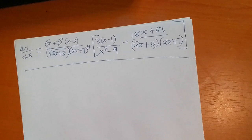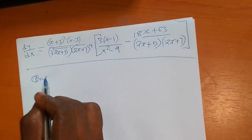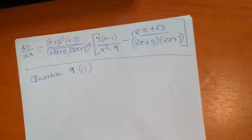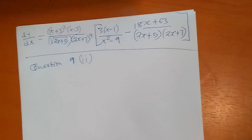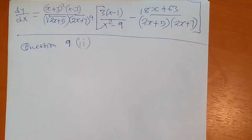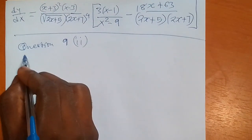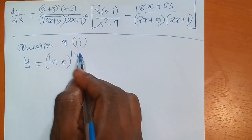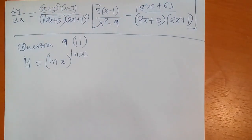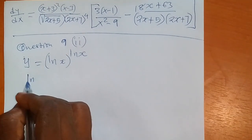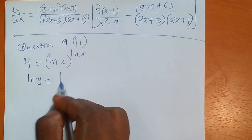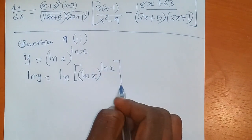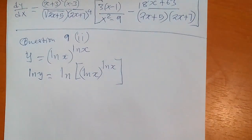So now we go to question 9 part 2. We are saying y equals (ln x)^(ln x). Let us apply ln to this function. So ln of y is equal to ln of (ln x)^(ln x).